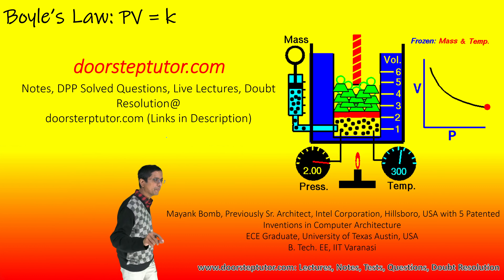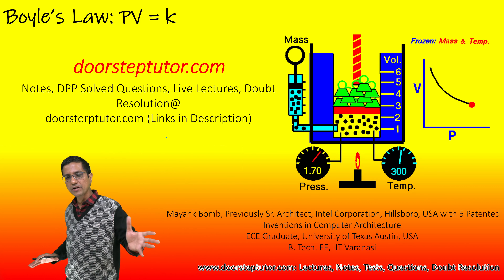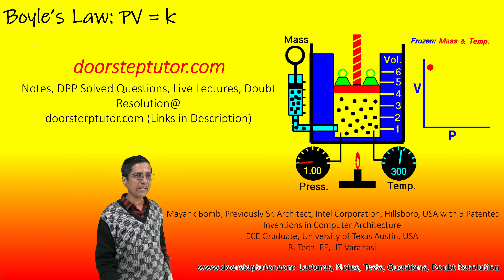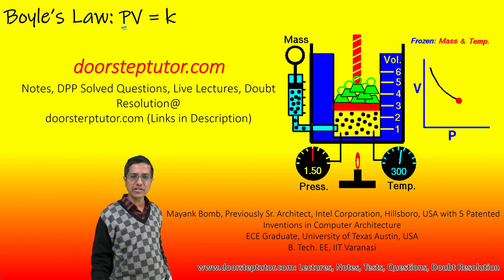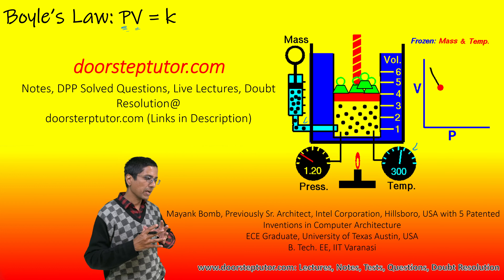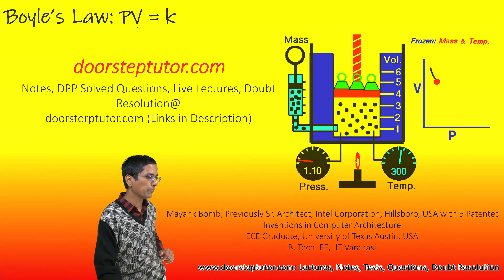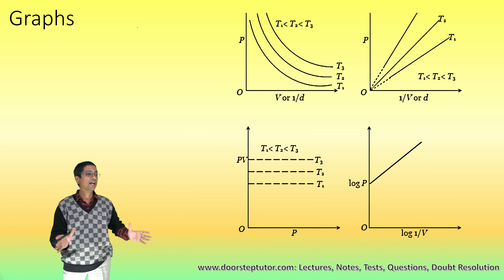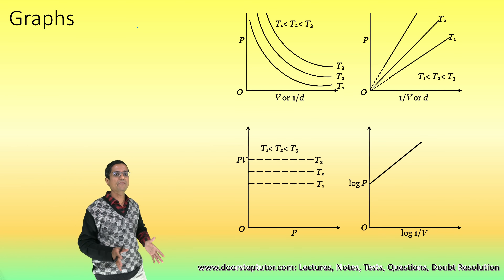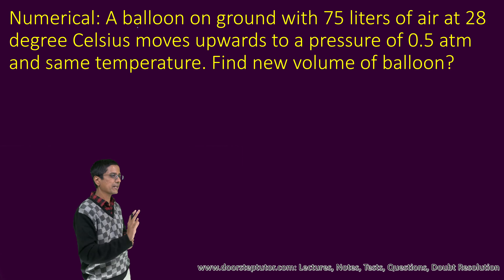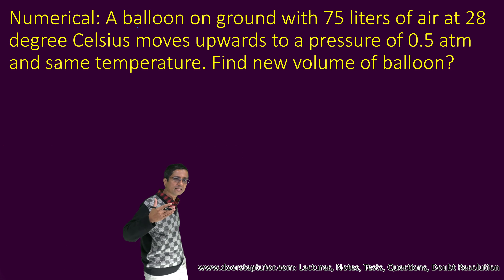In this class, we will be solving some numericals based on Boyle's law. We have already taken a class showing that the law is simple: PV is equal to K. So pressure into volume, if nothing else is changing — temperature is kept constant, mass is kept constant — and if I only vary either the pressure or the volume, then PV equals constant. Pressure into volume remains constant. Here are the graphs which represent this relationship, all representing the exact same relationship PV equals constant. If you are not clear on that, look at the class before this, where we have discussed Boyle's law in great detail.